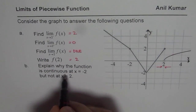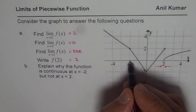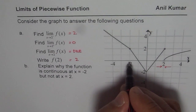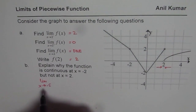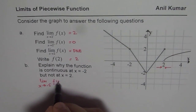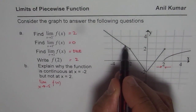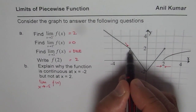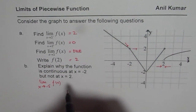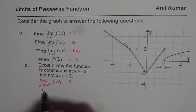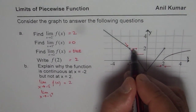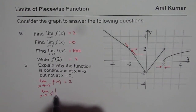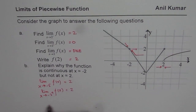Now let's explain why the function is continuous at x equals negative 2. The limit of the function as x approaches negative 2 from the negative side is 2. When you approach from the positive side, you also approach the value 2. So that limit is also positive 2.